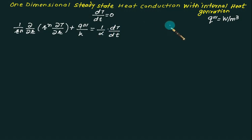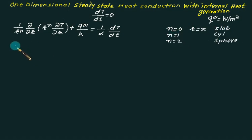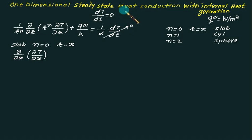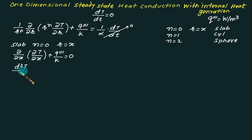Here, α is thermal diffusivity. For n=0 (replacing r with x), we get the slab equation. For n=1 it is a cylinder, and n=2 is a sphere. For the slab with n=0, the equation simplifies to d/dx(dT/dx) + q‴/k = 0, since the steady-state term is zero, giving us d²T/dx² = -q‴/k.